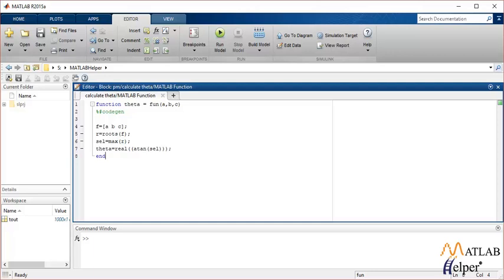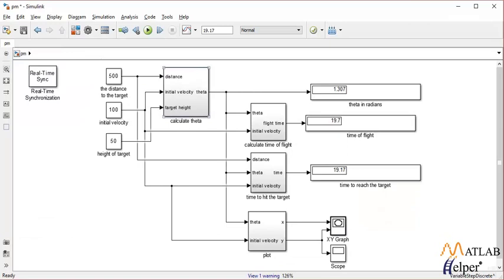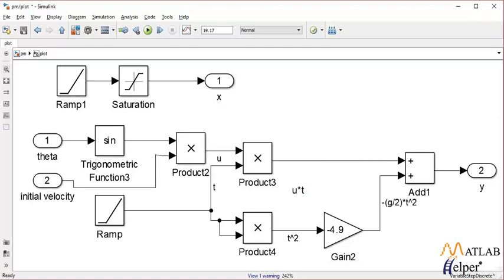Going back to the system, that will calculate theta. Now we know that the flight of the rocket will follow a projectile trajectory. So that trajectory can be plotted using the subsystem that I've designed named plot. Now this subsystem will help determine the value of x and y.